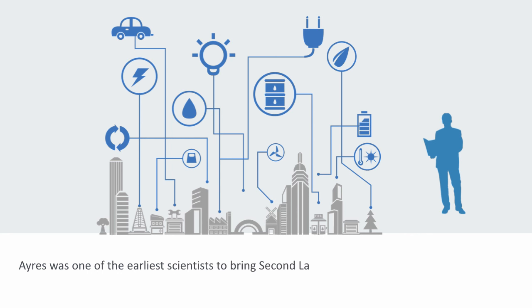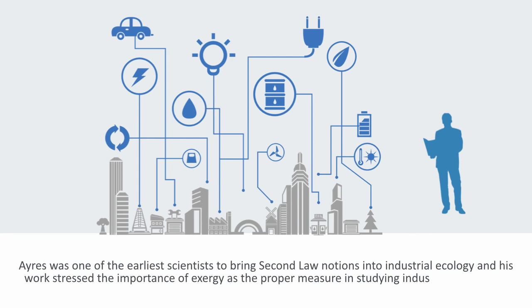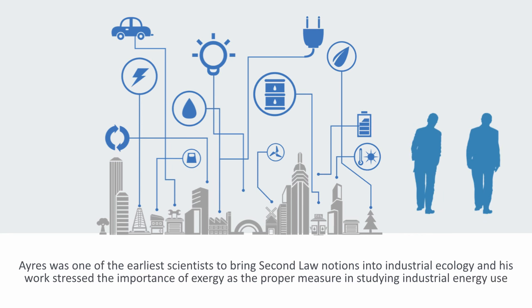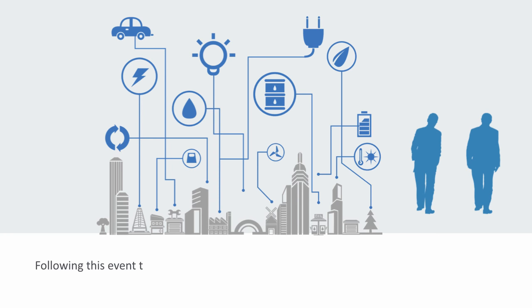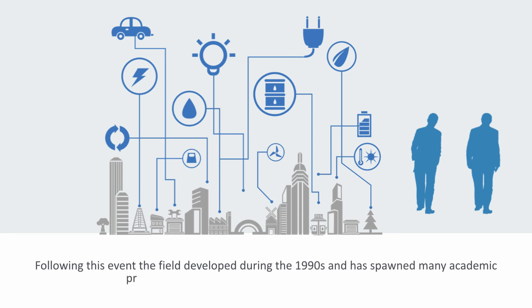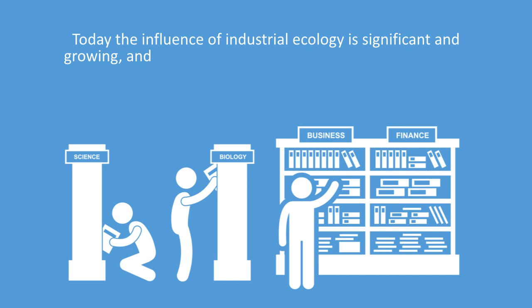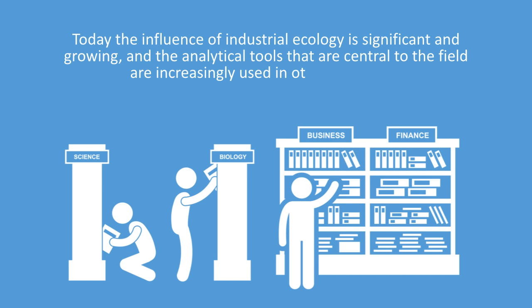The term industrial ecology was then popularized following the publication in 1989 of a seminal article in Scientific American by Robert Frosch and Nicholas Gallopoulos. Following this event, the field developed during the 1990s and spawned many academic programs, several journals, and an international society. Today the influence of industrial ecology is significant and growing, and the analytical tools that are central to the field are increasingly used in other disciplines. Industrial ecology principles are also emerging in various policy realms, such as the United Nations and China recently promoting the concept of the circular economy.